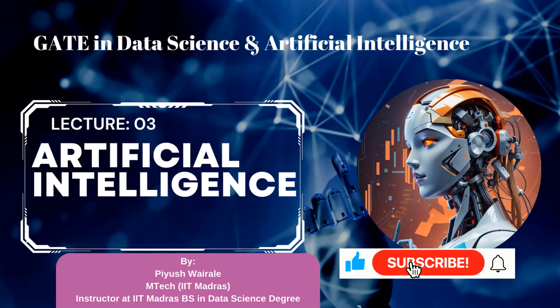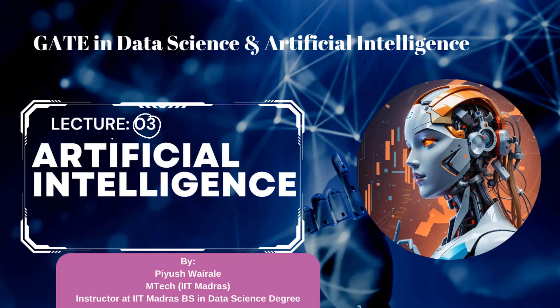Hello everyone. Welcome back to our Gate in Data Science and Artificial Intelligence course. This is lecture number 3 for Artificial Intelligence Labs. In the previous lecture, we discussed the introduction to a search problem and various key terminologies. We also discussed the different types of search methods: uninformed search, informed search, and adversarial search, which are part of our Gate syllabus.